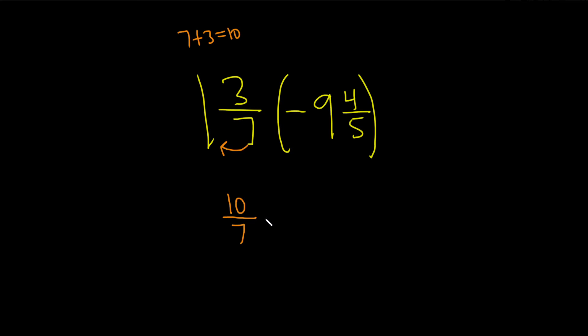There's really a times here, I'm going to put the times. 5 times 9 is 45, just ignore the negative. Then you add the 4, so you get 49. Again, 5 times 9 is 45, plus 4 is 49. That number goes up top, and you keep the 5 on the bottom.